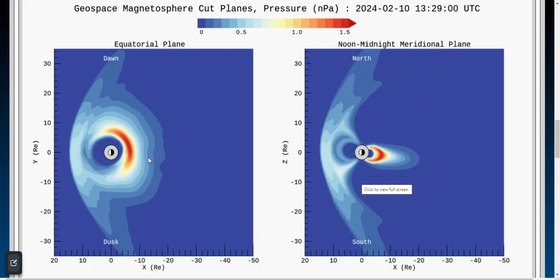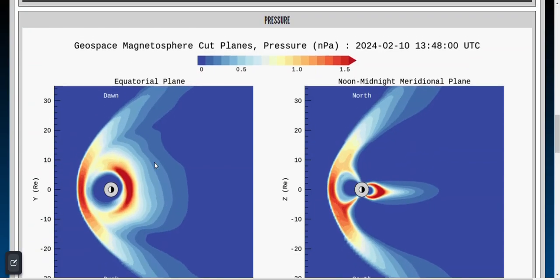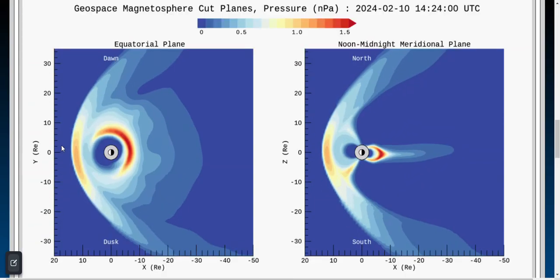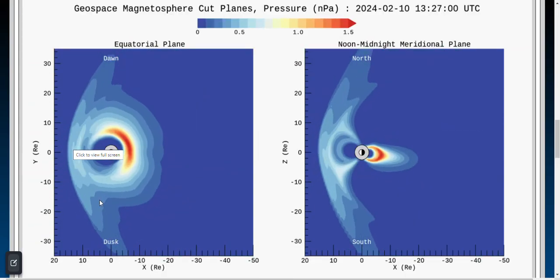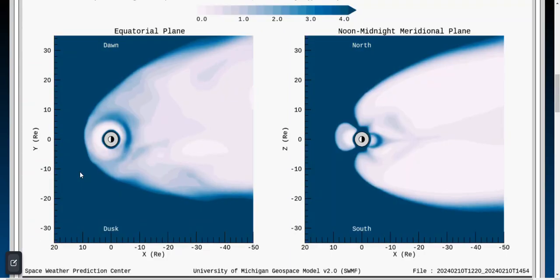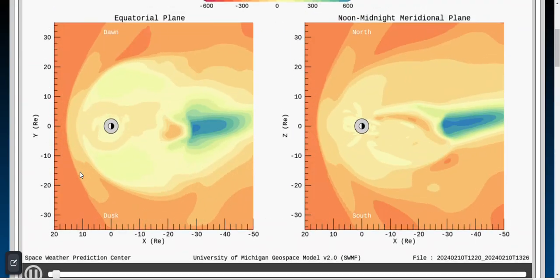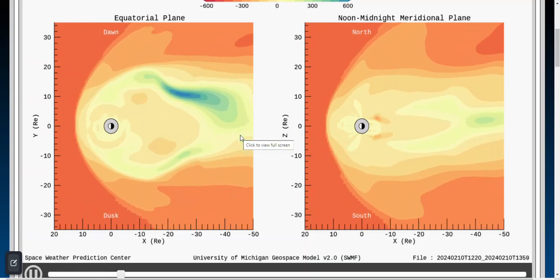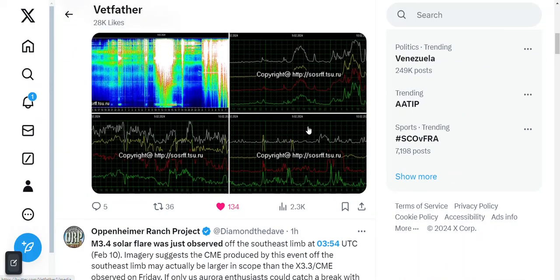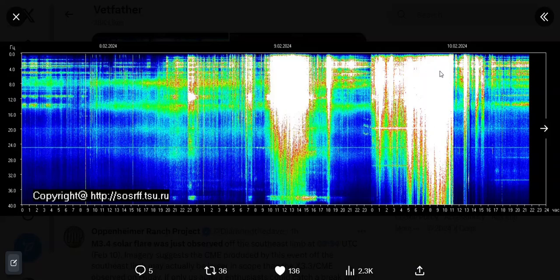But if an X-class flare was to hit, a direct shot at us, all this would be red, the highest scale. Here's more, our shields. You can see waves of this reconnect right here. Taking a look at the Schumann resonance - off the chart. This was a while back. Right now currently it's subsided, but there were two blasts from the eighth and the ninth.